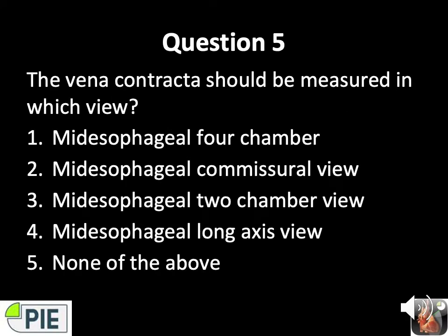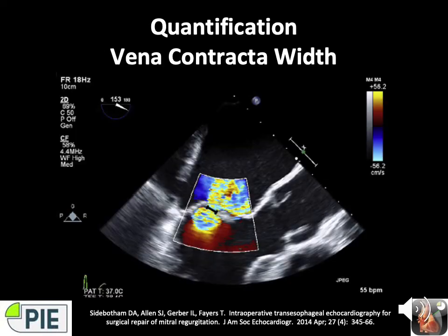Question number 5: The vena contracta should be measured in which view — ME4C, ME commissural view, ME 2-chamber view, ME LAX, or none of the above? The vena contracta width is the narrowest central flow region of the jet at the orifice of the regurgitant valve. It is measured in the mid-esophageal long axis view in late systole with the valve closed. The long axis view best gives the narrowest width of the jet; other views slice the line of coaptation obliquely and can make the jet look very wide when it may not be.